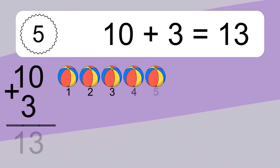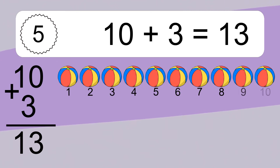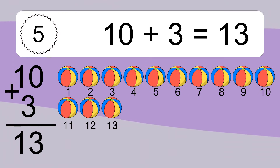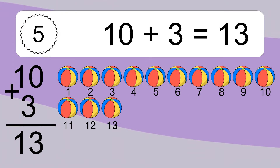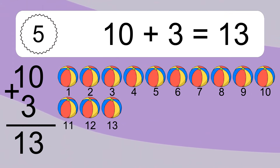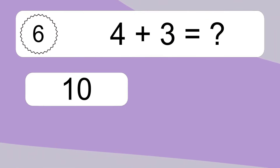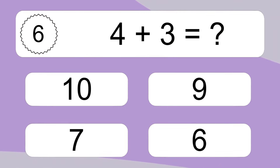Ten plus three equals what? Ten plus three equals thirteen. Let's count it: one, two, three, four, five, six, seven, eight, nine, ten, eleven, twelve, thirteen.